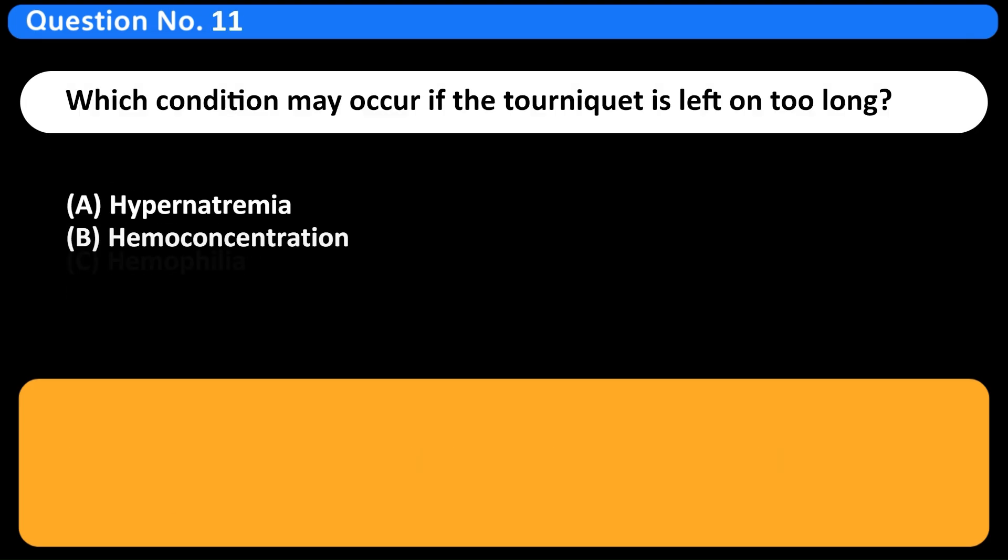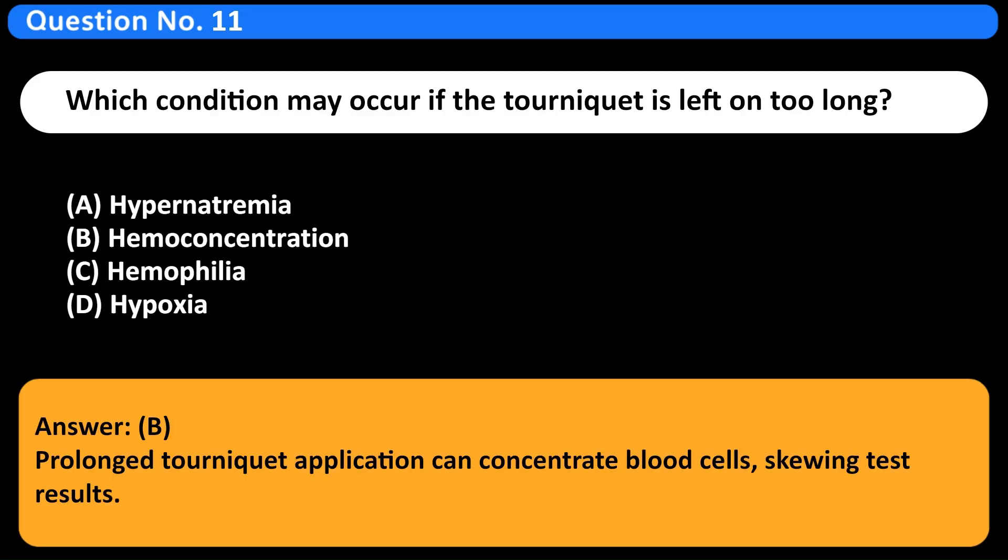Which condition may occur if the tourniquet is left on too long? A. Hypernatremia. B. Hemoconcentration. C. Hemophilia. D. Hypoxia. Answer B. Prolonged tourniquet application can concentrate blood cells, skewing test results.